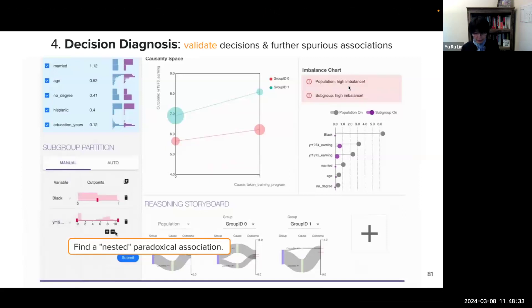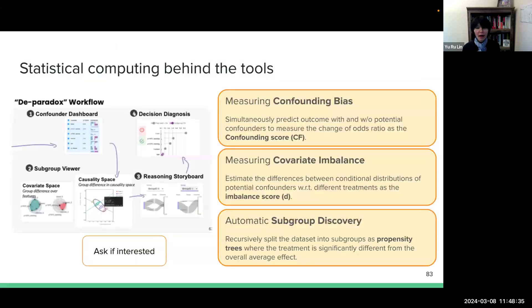So in this system, there are three key statistical methods behind the tools, including the method for measuring confounding biases, for measuring covariance imbalance, and for automatic subgroup discovery. So again, ask me if you are interested in knowing more.